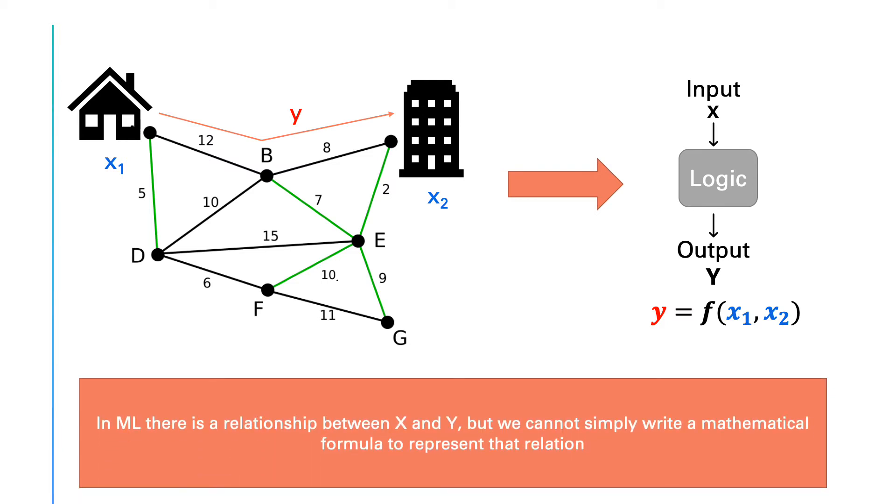In machine learning problems, usually, it is not easy to write a mathematical formula to map X to Y. There is a pattern between X and Y, but it is not easy to write it down. This relation might be very complex or vague, and it is not usually an exact mathematical relation. It is sort of a probabilistic relation. Let's try to understand this better with an example.